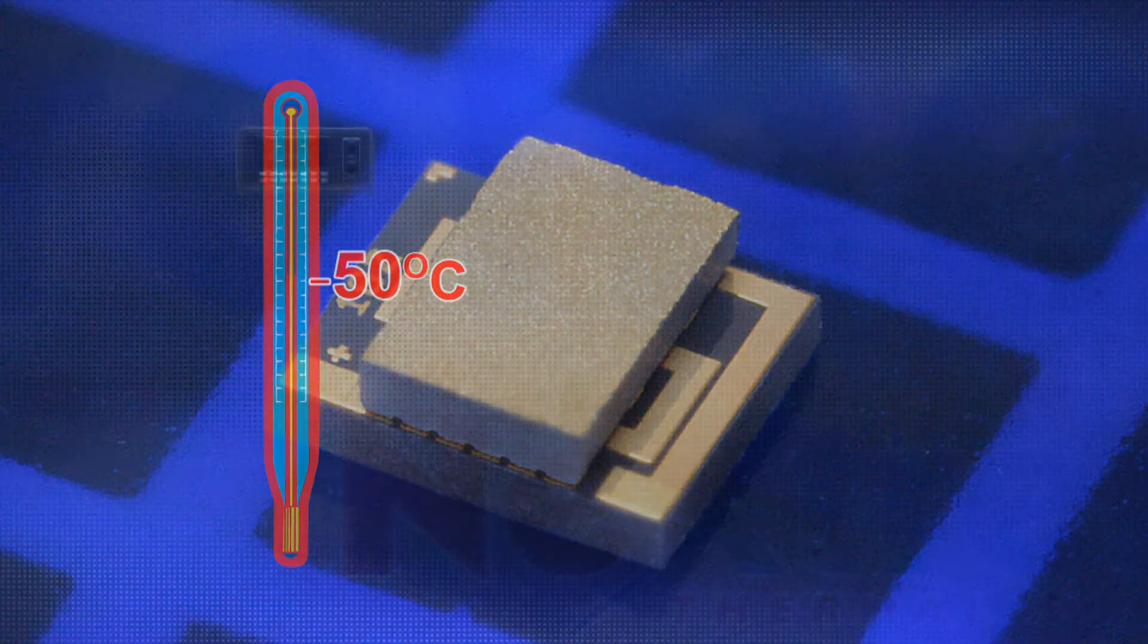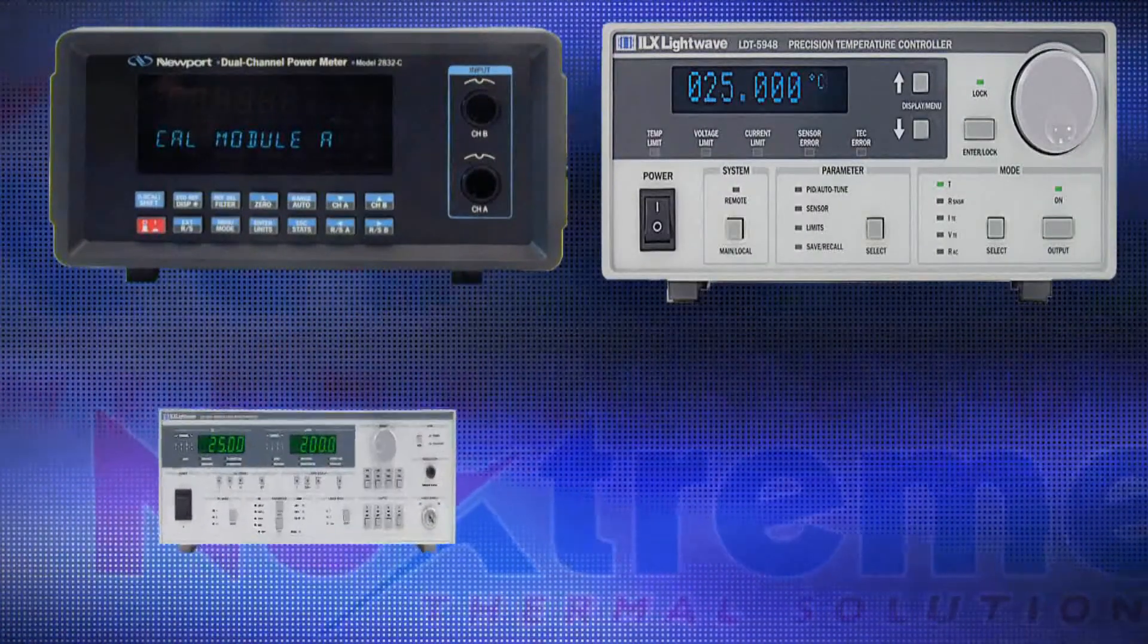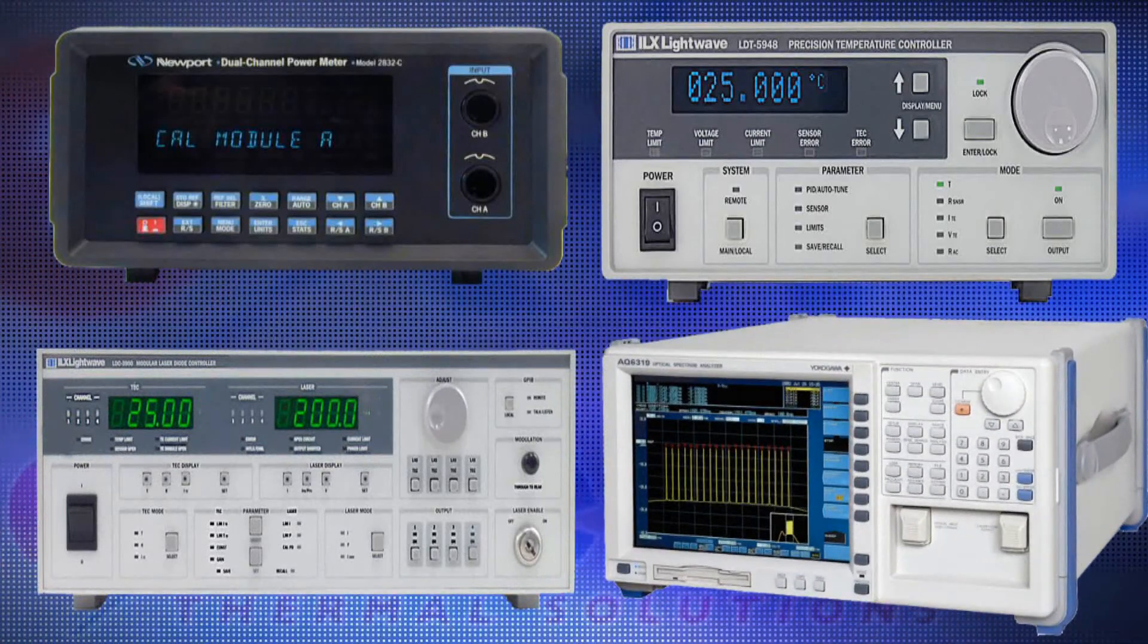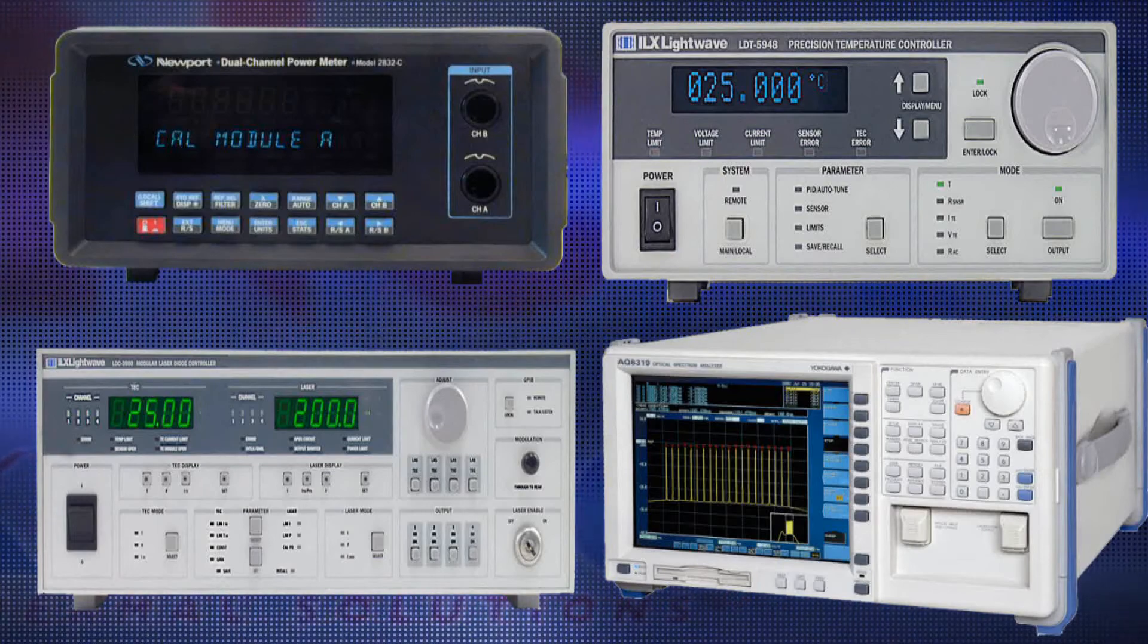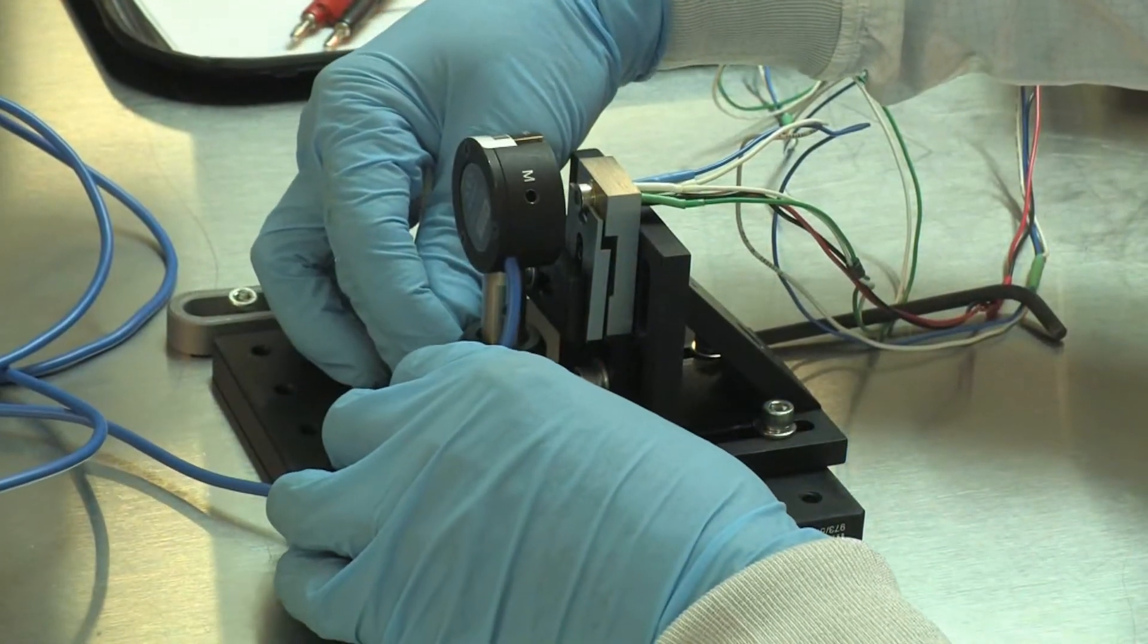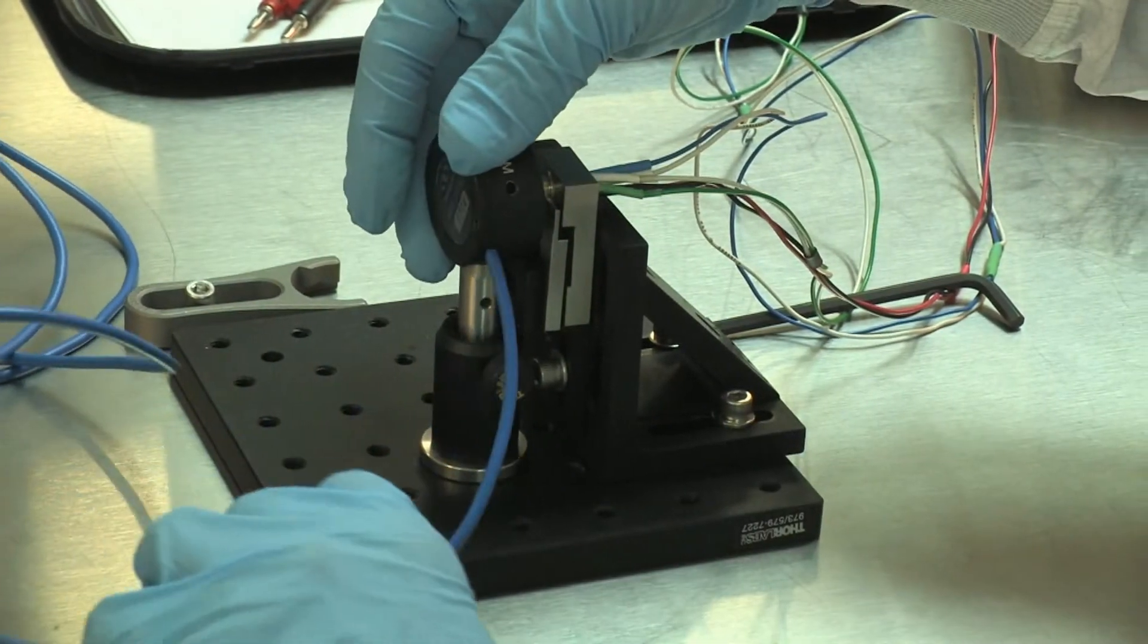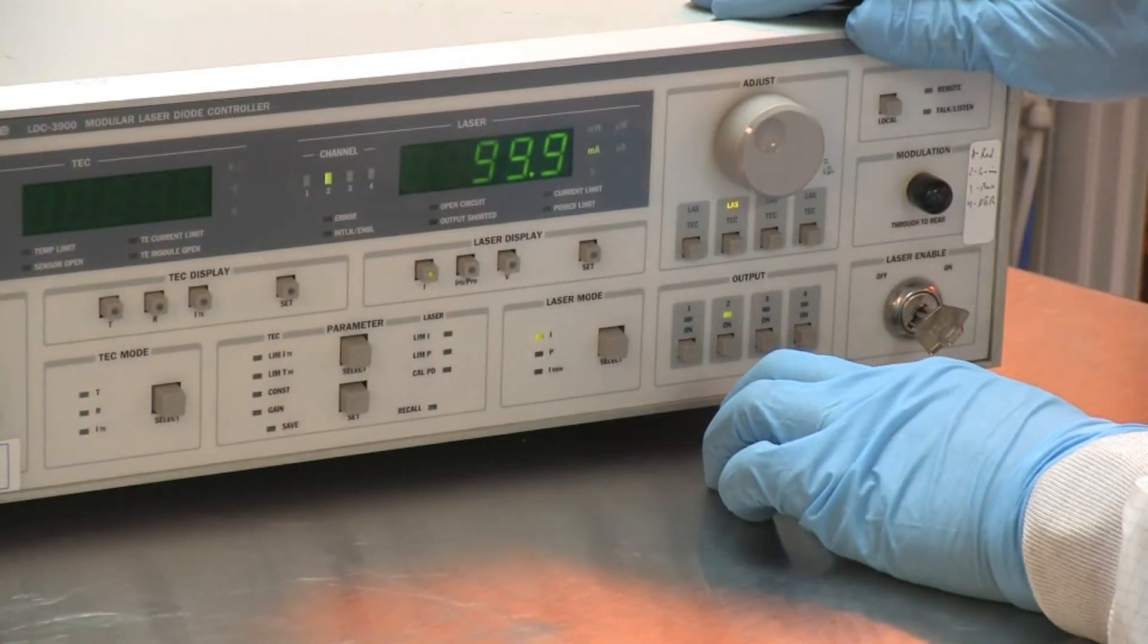A test bed consisting of a power meter, temperature controller, laser diode controller, and optical spectrum analyzer was assembled to measure the effects of cooling on laser output and wavelength. A photo detector was positioned in front of the infrared window in the package and connected to the power meter. The drive current for the laser diode was turned on.